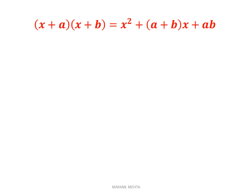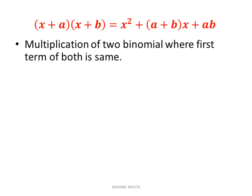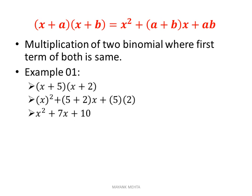The next identity is the multiplication of two binomials where the first term of both is the same — for example, (x+a)(x+b). The first term is x in both. To simplify this using the identity, take the example (x+5)(x+2): you start with x² — the square of the first term — plus...